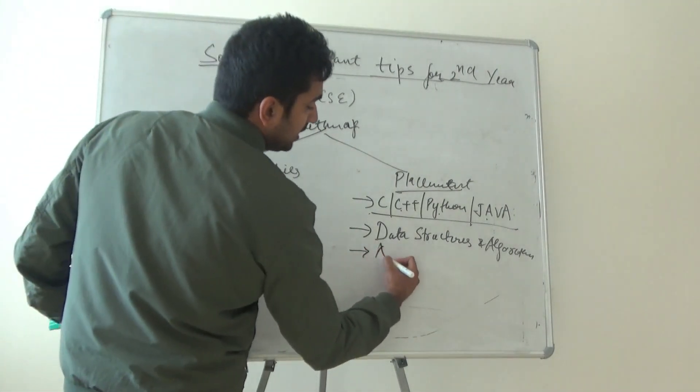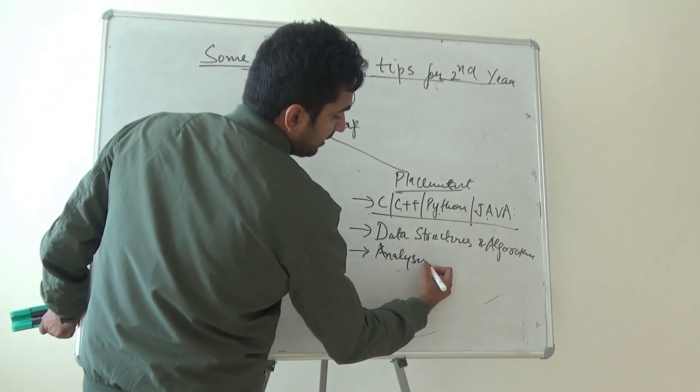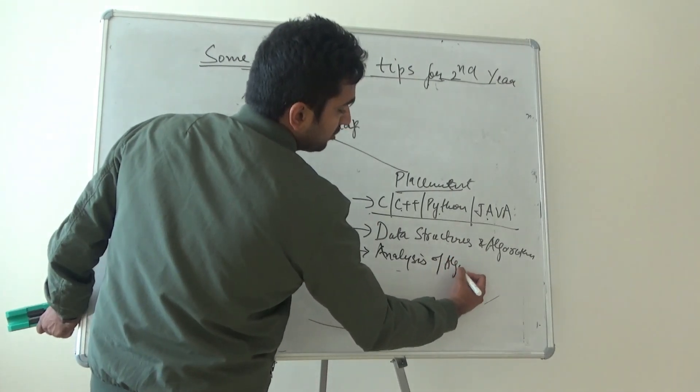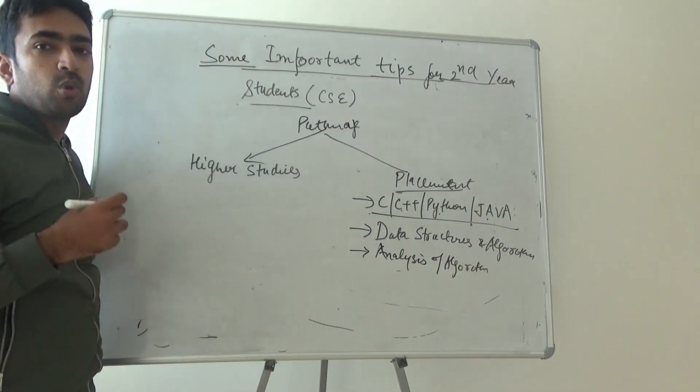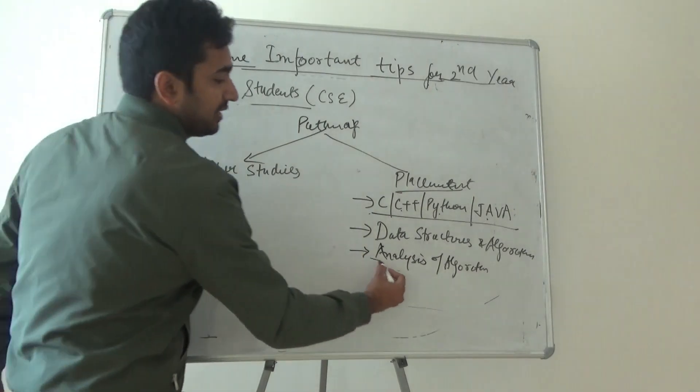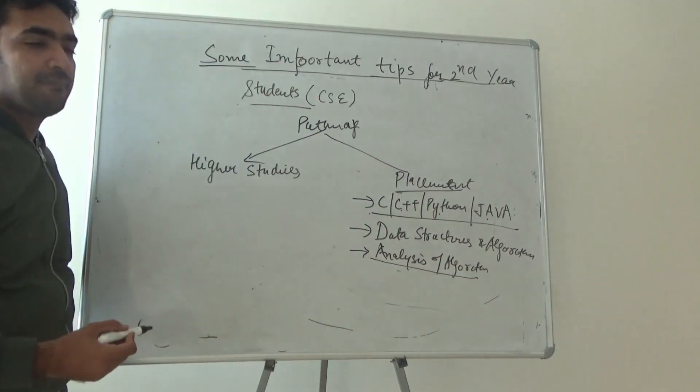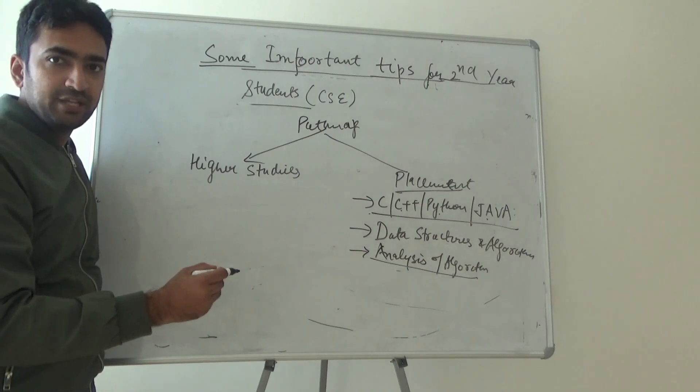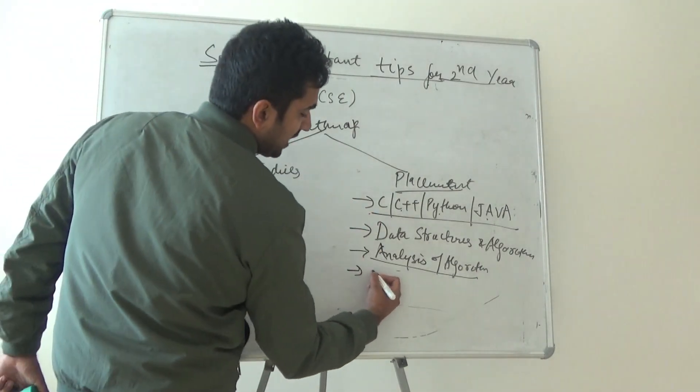Data structures and algorithms—companies definitely ask questions in these subjects. Apart from that, there is a subject known as analysis of algorithms. When you have coded a program, what kind of complexity does that program have?